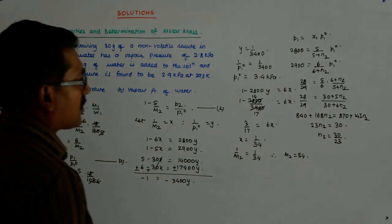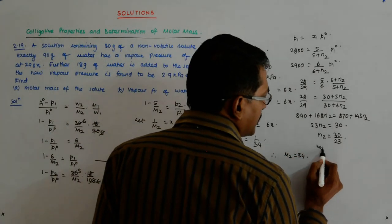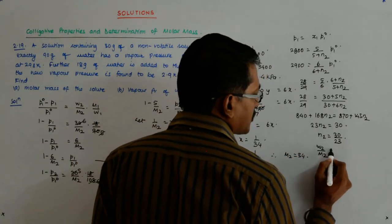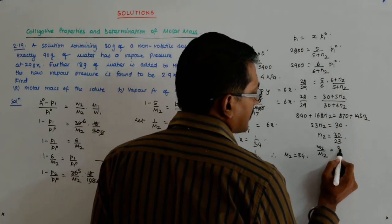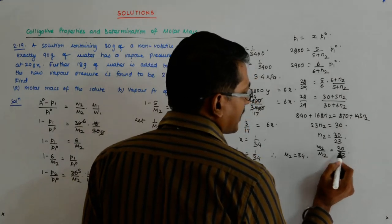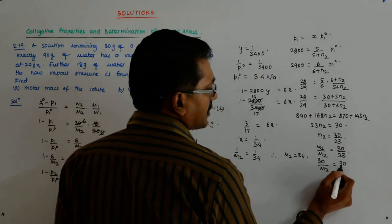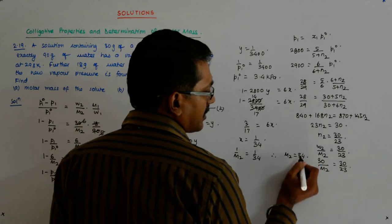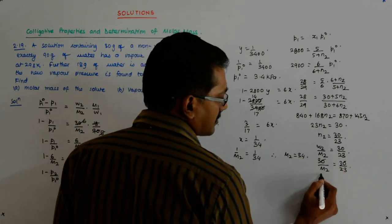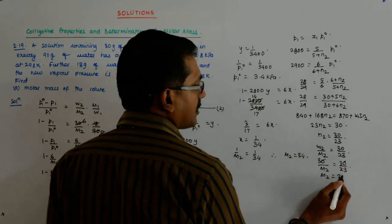Now, if I pull it this way, it becomes 23 n2 is equal to 30 by 23. Now what was, what is n2? n2 is w2 upon m2, is it not? Now, that is equal to 30 upon 23. What is w2? That is 30 upon m2 is equal to 30 upon 23. You see, cuts. So m2 becomes 23.